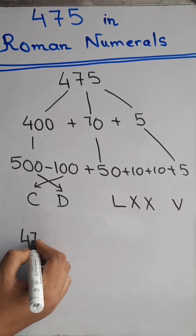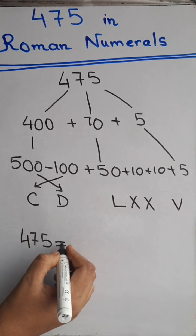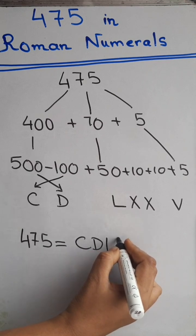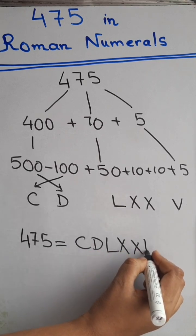Therefore, the Roman numeral for 475 is C, D, L, X, X, V.